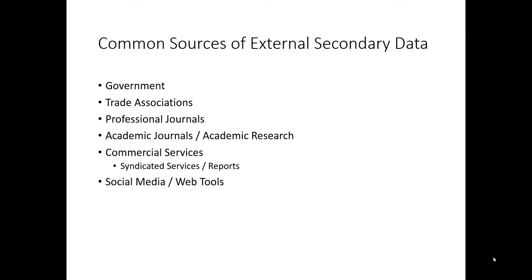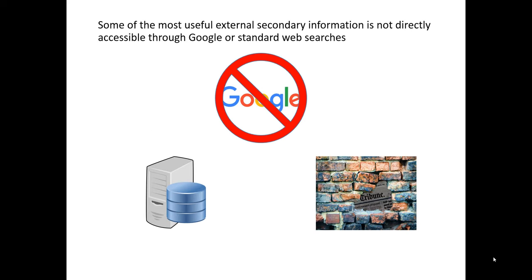In the following slides, we'll offer some illustrative examples of these types of secondary information and how they can be used by marketers in the real world. One caveat before we begin: we live in a world where Googling has made it so easy for us to find the types of information that we usually need to solve day-to-day problems.